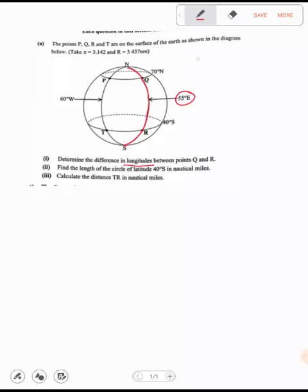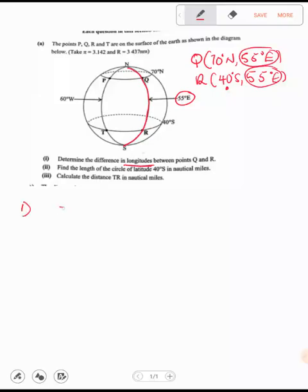So we are going to say Q is on 70 degrees north and 55 degrees east. Then R is also on 40 degrees south and 55 degrees east. Now, the east here and the east here, that's a longitude. Don't be quick to get this. The question did not say latitudes. It says longitudes.